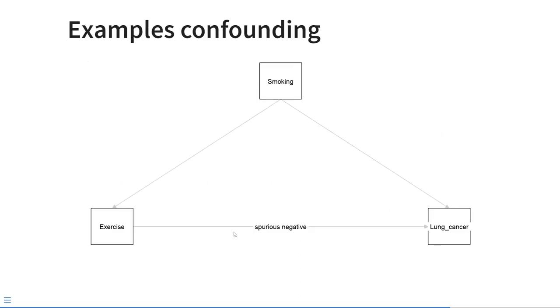So let's look at an example of confounding. We have three variables: exercise, smoking, and lung cancer. It's well known by now that smoking is a cause of lung cancer, but it may also cause a decrease in exercise because people who smoke tend to be out of breath more easily. And people who smoke tend to have lower general fitness. So we would expect a negative effect on exercise. If we ignore smoking and just look at the relationship between exercise and lung cancer, then we would observe a negative effect of exercise on lung cancer. But this effect is spurious. That means it's an illusion. It appears only because smoking is a negative cause of exercise and a positive cause of lung cancer.